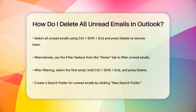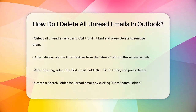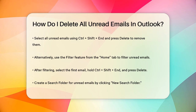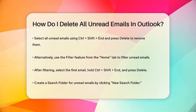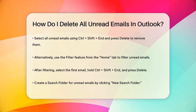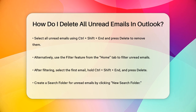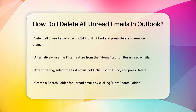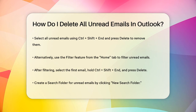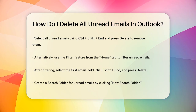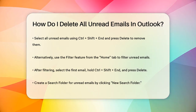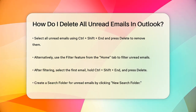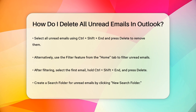Another method is to use the filter feature. From your main mail window, go to the folder with the unread emails and navigate to the Home tab. Click on Filter Email and select Unread. This will filter out all the unread emails, allowing you to see them in a list. Select the first email, hold Ctrl-Shift-End to select all the emails, and then press the Delete key.